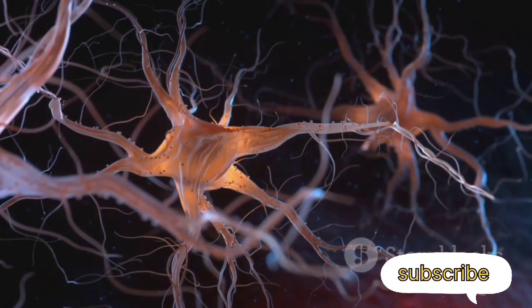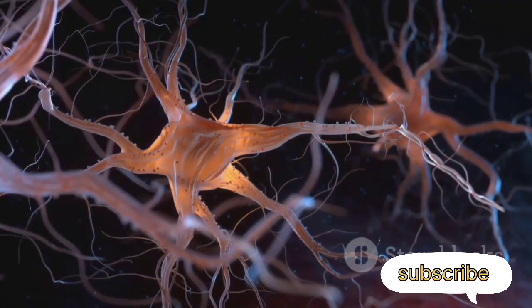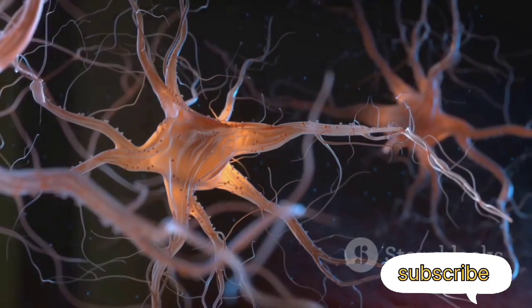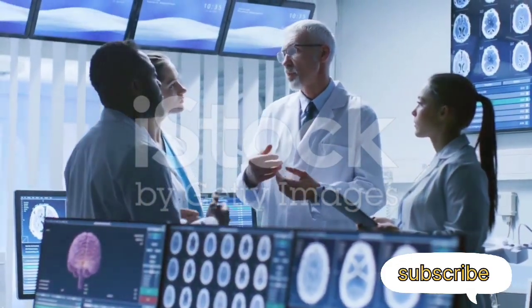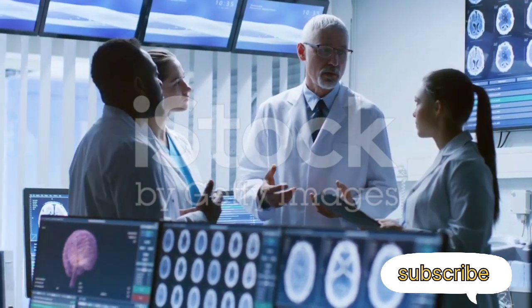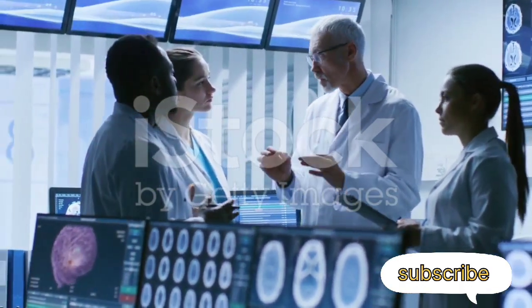Then we have the axon. This is the trunk extending into the ground, or the long, slender projection that takes messages away from the cell body and sends them to other neurons. Picture the axon as the trunk of our tree extending deep into the ground, reaching out to other trees in the forest.